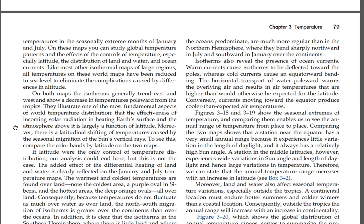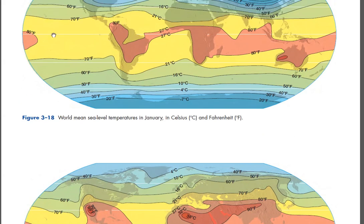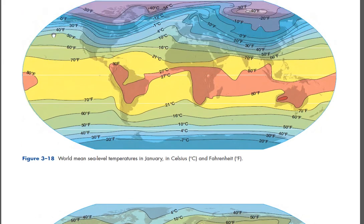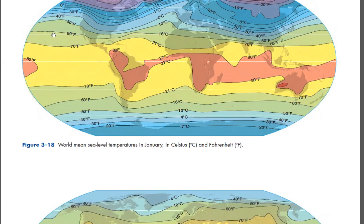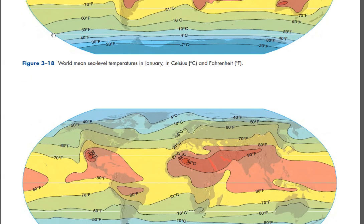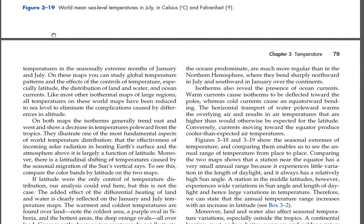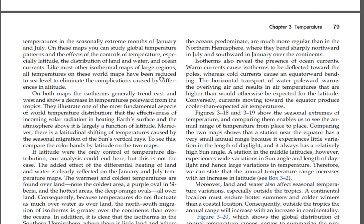If latitude were the only control of temperature distribution, our analysis could end there, but this is not the case. The added effect of the differential heating of land and water is clearly reflected on the January and July temperature maps. The warmest and coldest temperatures are found over land — note the coldest area, a purple oval in Siberia, and the hottest areas, deep orange ovals all over land. Because temperatures do not fluctuate as much over water as over land, the north-south migration of isotherms is greater over the continents than over the oceans. The isotherms in the southern hemisphere — where there is little land and oceans predominate — are much more regular than in the northern hemisphere, where they bend sharply northward in July and southward in January over the continents.